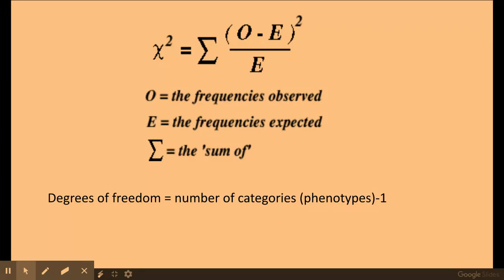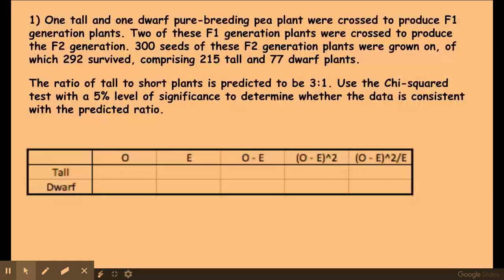So it's observed take expected value squared over expected, and it's the sum of all of those. Then what you would do is look up your sum of chi-squared in a table of probability by looking at the correct degrees of freedom, which is the number of phenotypes take away one. And again I'll show you this in a second.